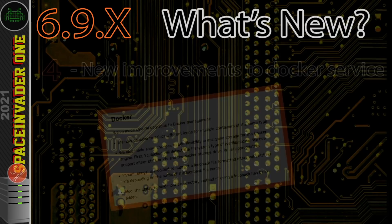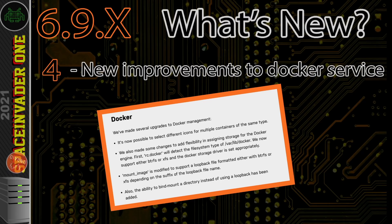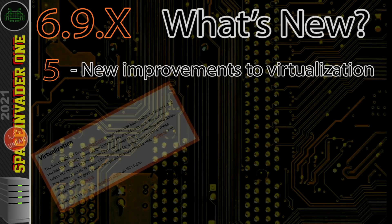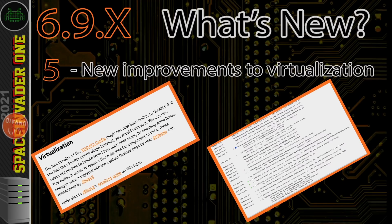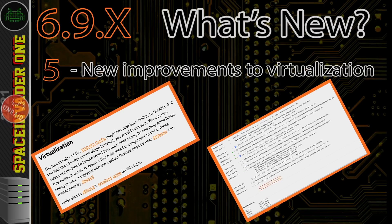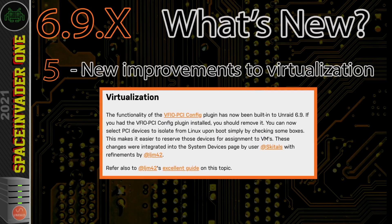Unraid's Docker service has seen some upgrades too — we'll look at that when we set up our server and install some containers. Virtualization hasn't been forgotten either, with awesome upgrades making it super easy to pass through various devices. Gone are the days of having to edit the syslinux.config file and stub devices manually. You can now select devices you want to pass through, tick a checkbox, reboot the server, and on boot those devices are stubbed and available for pass-through straight from the VM template.